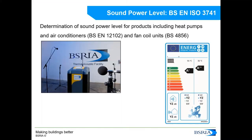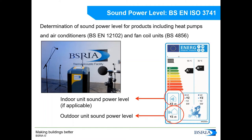Looking at common test methodologies: for sound power levels, there is a standard called BS EN ISO 3741, which covers measurement in a reverberation chamber. There are also specific test standards for particular product types such as heat pumps, air conditioners, or fan coil units. Many will be familiar with energy labels on domestic appliances such as fridges and washing machines — the same applies for heat pumps and air conditioners, and those energy labels include a determined sound power level to help manufacturers, installers, and suppliers compare products.